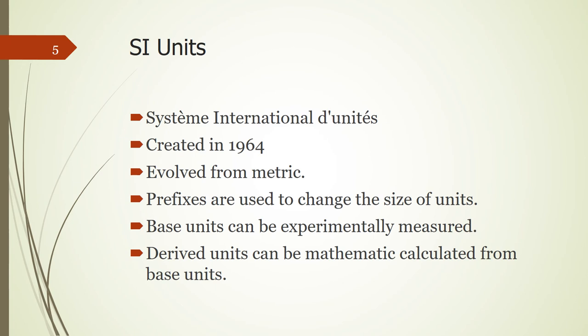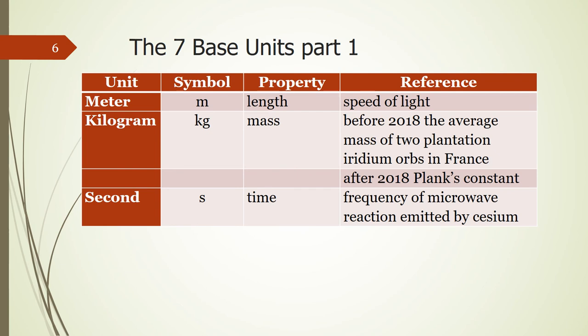We have base units. And these are going to be ones that can be experimentally determined. You can get an instrument and you can measure it. And then you have derived units, which are mathematically calculated from your base units. There are seven base units within the SI system. Obviously, they don't all fit really on a particular slide. So we're going to do this in two slides.